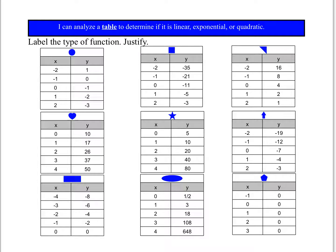Let's analyze the first table (the circle). I ask: is the rate of change constant? The X values go up by one each time, and the Y values go down one, down one, down one, down one. So this is a linear function with a constant rate of change of negative one over one.